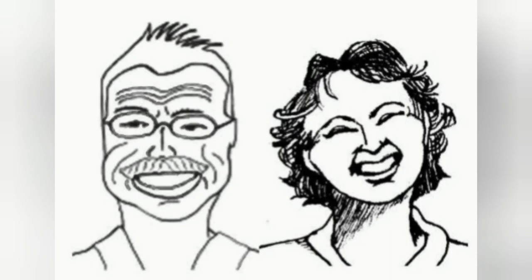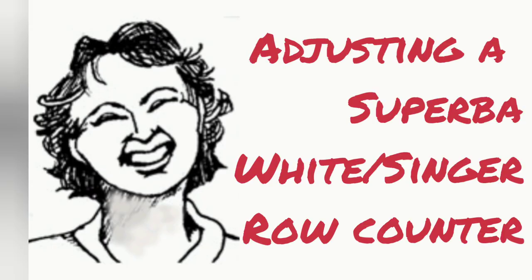The Superba White Singer family of machines are French-made machines, all very similar to one another, and all have similar row counters.